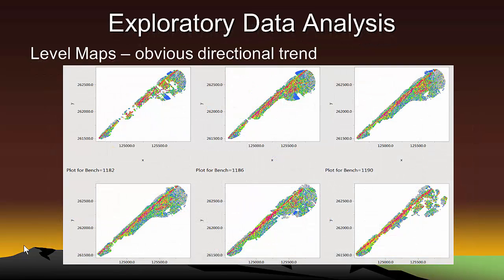The blast hole data contains samples from six benches or levels. Each one of these maps shows the spatial pattern of gold grades at one of the six elevations or benches. The red and magenta colors indicate the highest gold grades. That is, the red and magenta colors indicate samples whose grade is equal to or higher than the 0.8 quantile of the blast hole sample distribution.